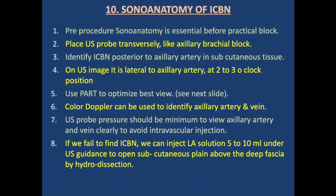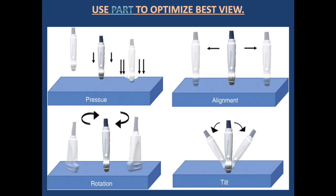Ultrasound setting: place the ultrasound machine in front of the operator's eyes. Use a high-frequency linear probe above 12–14 MHz. Use in-plane technique (out-of-plane can be used if safer). Identify needle orientation with the probe and keep the needle angle parallel to the probe. Needle length of 50–80 mm may be used. Depth setting is 1–3 cm to view the artery and vein. Pre-procedural sonographic anatomy is essential: place the ultrasound probe transversely as in axillary brachial plexus block. Use the PART technique (Pressure, Alignment, Rotation, Tilt) to optimize the view. Use color Doppler to identify the axillary artery and vein.